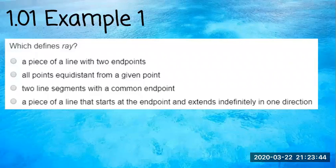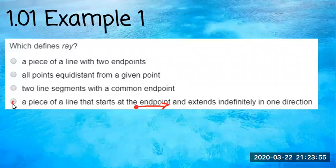Two line segments with a common endpoint — nope. The correct answer is 'a piece of a line that starts at an endpoint and extends indefinitely in one direction.' That is what a ray is.